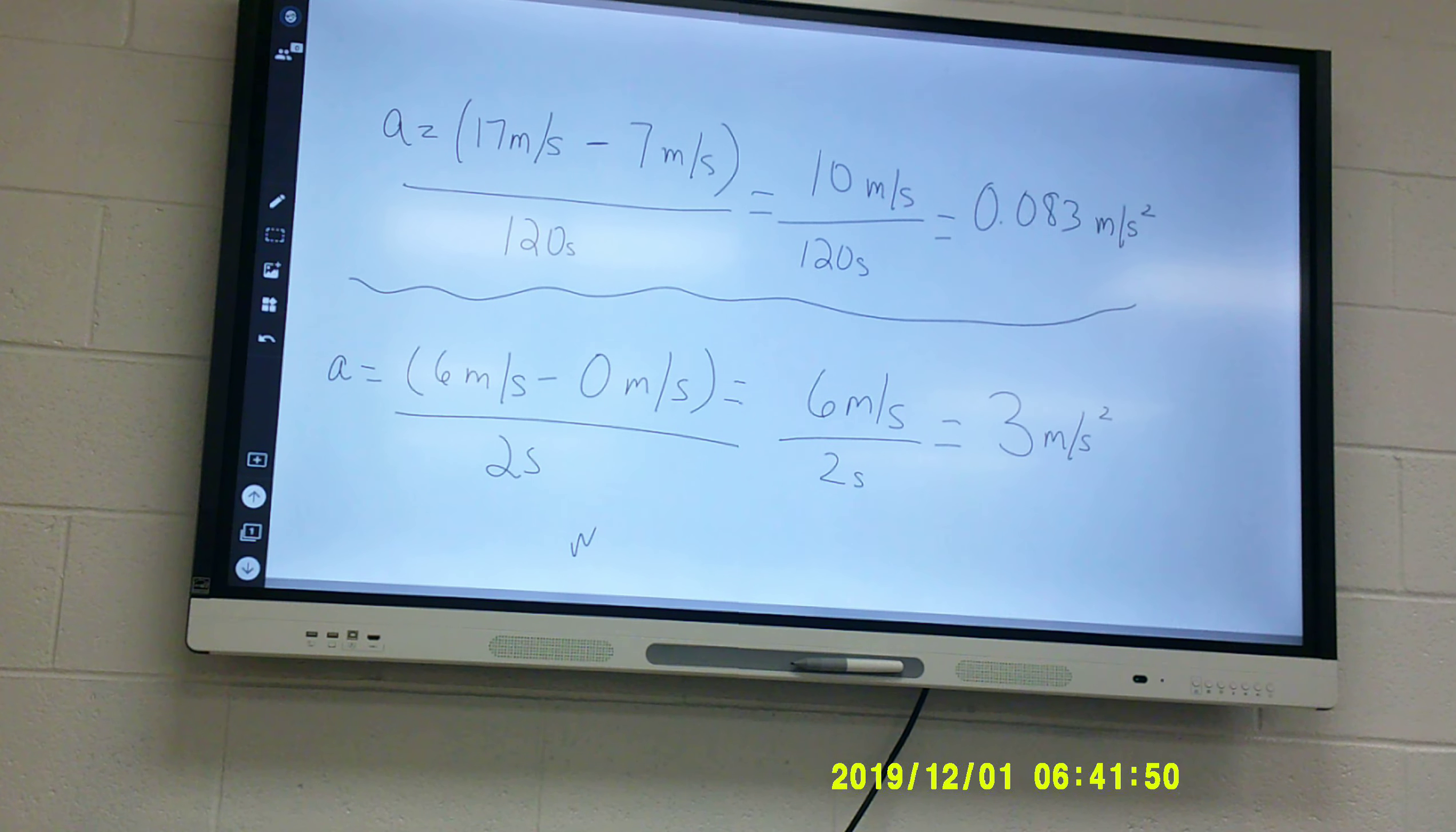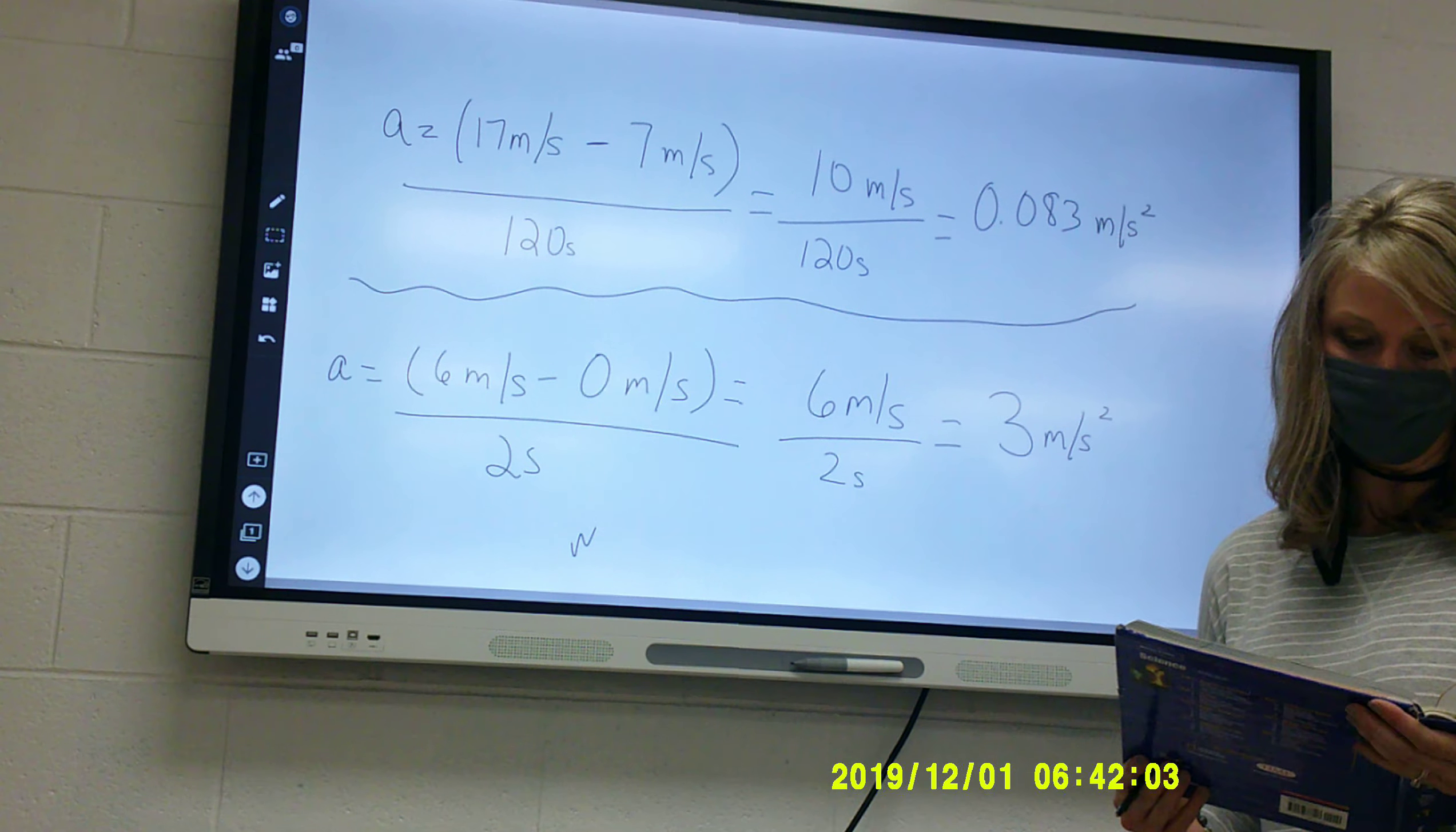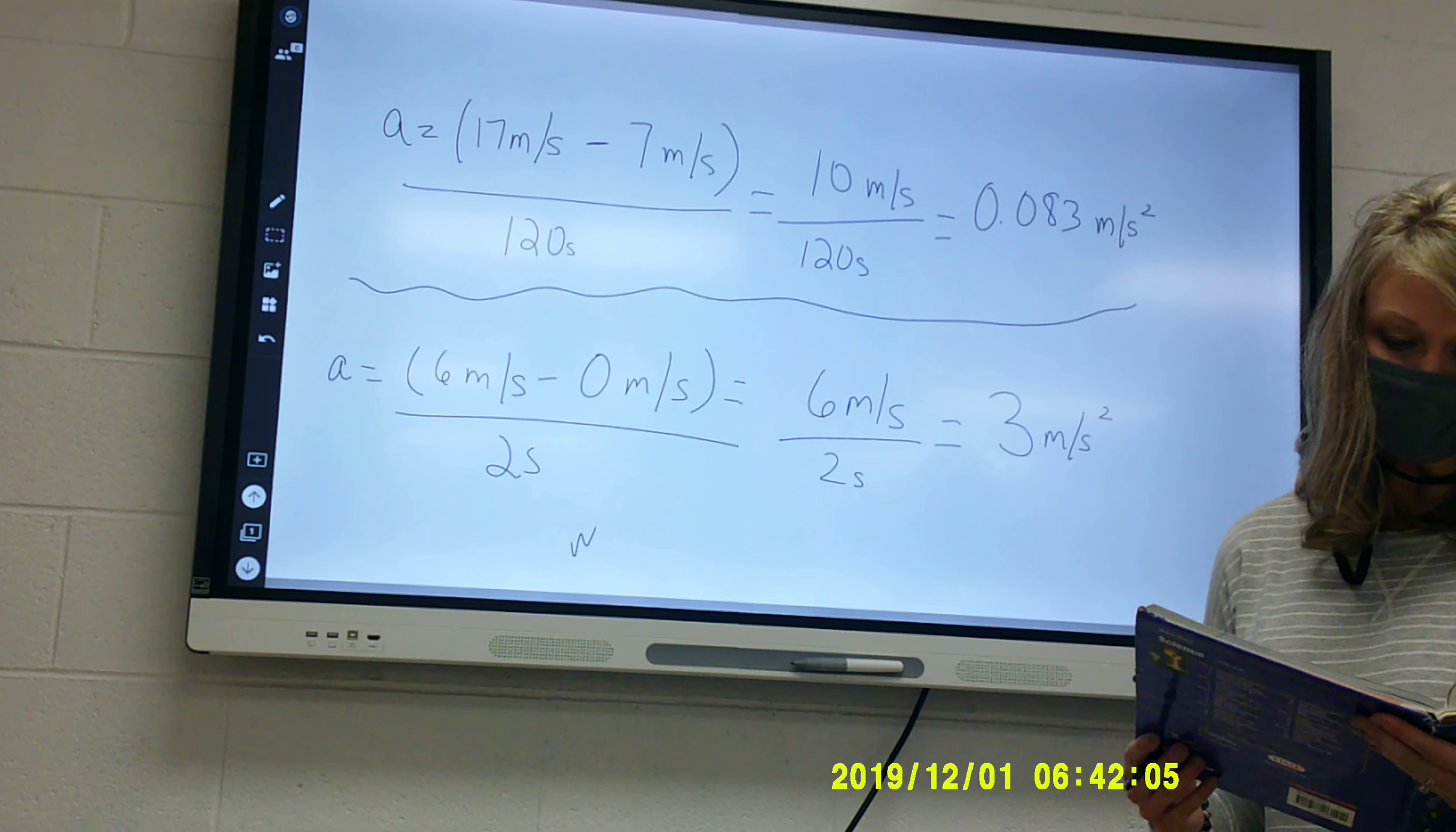And then C, a horizontal line, would indicate acceleration of what? Straight. So, it's not speeding up. It's not slowing down. So, it's zero or a constant speed. Zero. Okay.